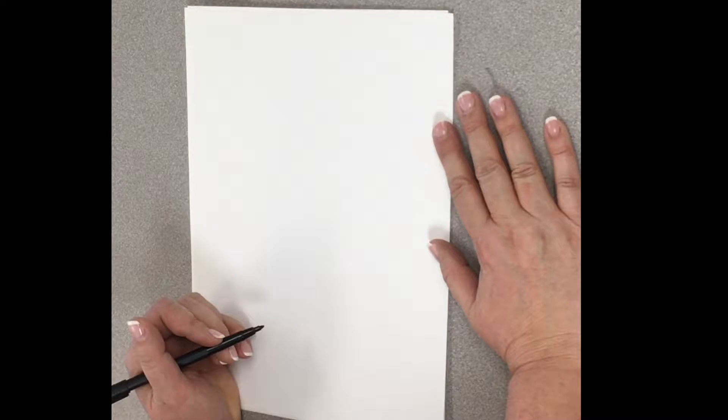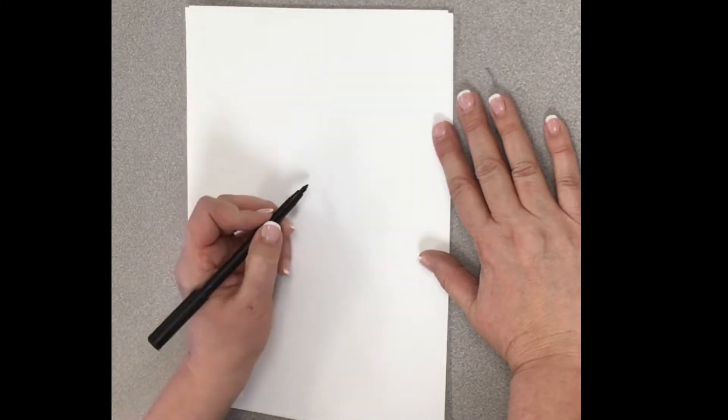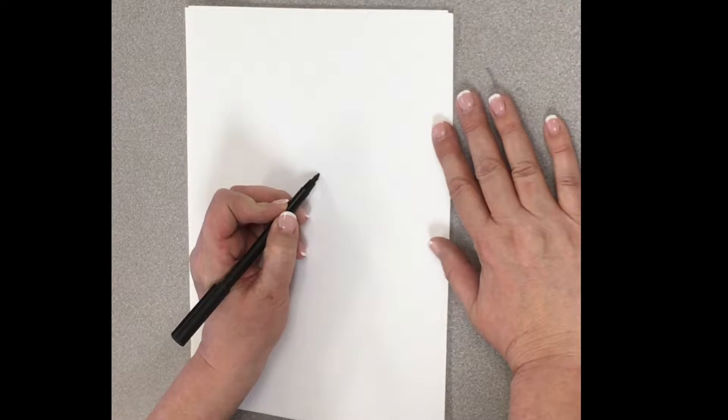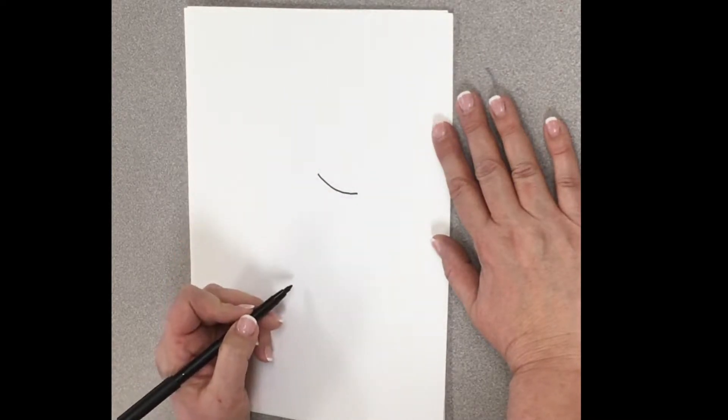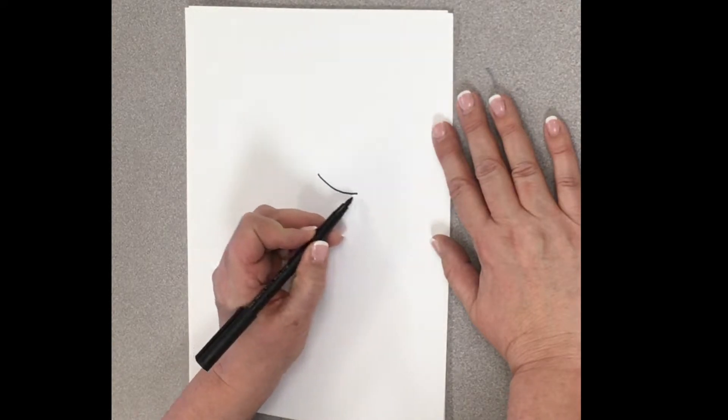We are going to start by drawing a line kind of in the middle of our paper coming out like this. So it's not really straight, it's just kind of a curve.